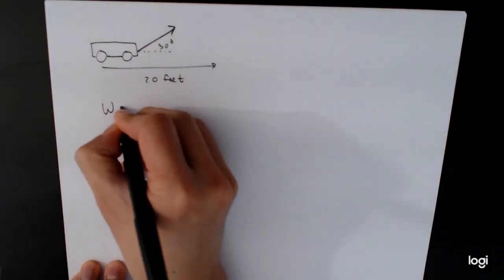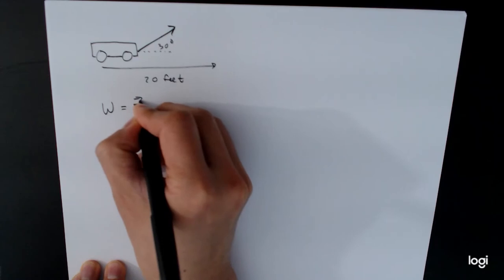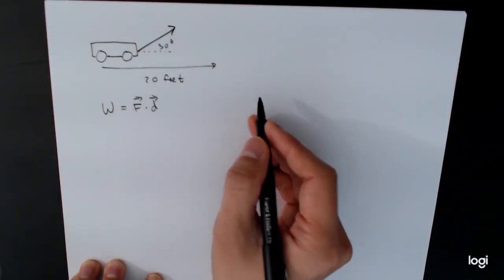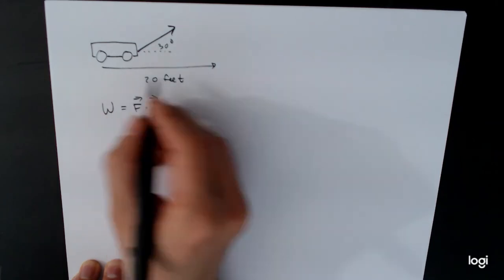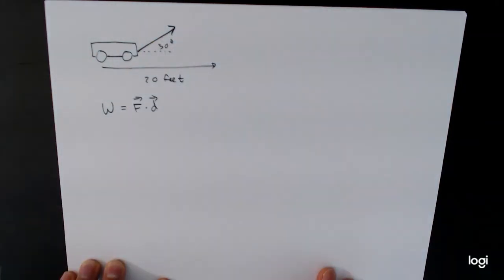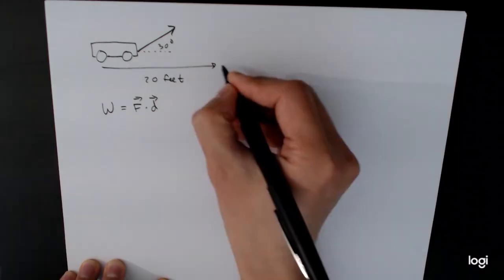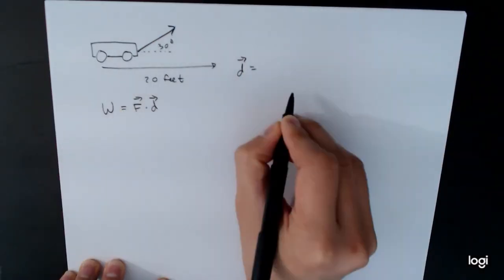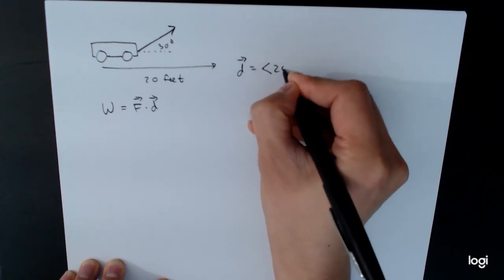And so what we're going to do is we're just going to use our work formula. Work is equal to force dot d, where d is the displacement. And so we have to translate all of this into vectors in component form. So we'll start with d first because d is simplest. We want 20 feet in the horizontal direction, so <20,0>.